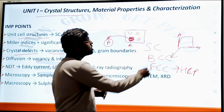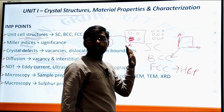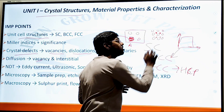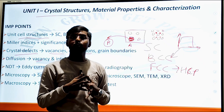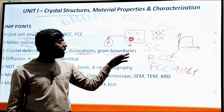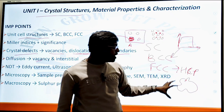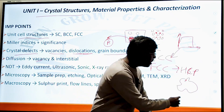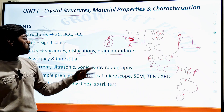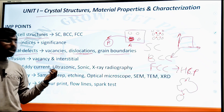Dislocation means that in a crystal structure, if some atoms or molecules enter and the location of existing atoms or molecules is displaced, this is called dislocation. Grain boundary means that at the boundary of a material's structure, if the grain structure changes or becomes a pure grain structure, it is called a grain boundary.